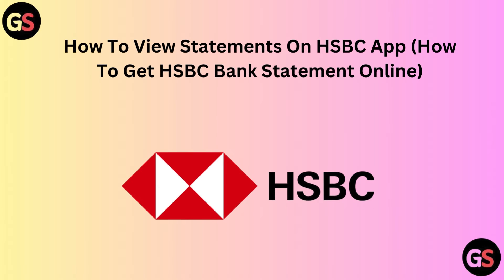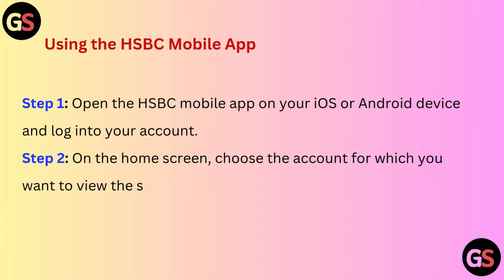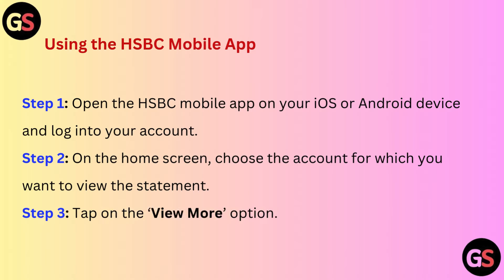Hello friends, today I am talking about how to view statements on the HSBC app. Using the HSBC mobile app: Step 1, open the HSBC mobile app on your iOS or Android device and log into your account. Step 2, on the home screen, choose the account for which you want to view the statement.